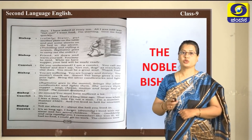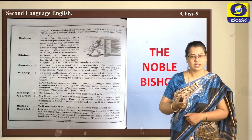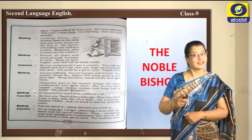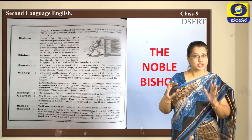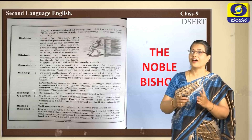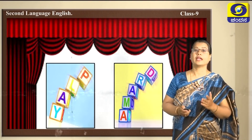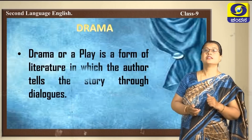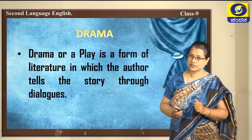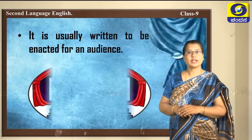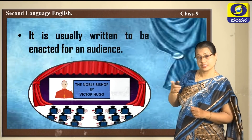If you open your book on page 105, you will see the lesson 'The Noble Bishop.' Do you find any difference between this lesson and the other lessons? The other lessons — the Enchanted Pool, the Three Questions, Justice Above Self — are all like stories. But this lesson is different; it is a drama or a play. It is usually written to be enacted for an audience.